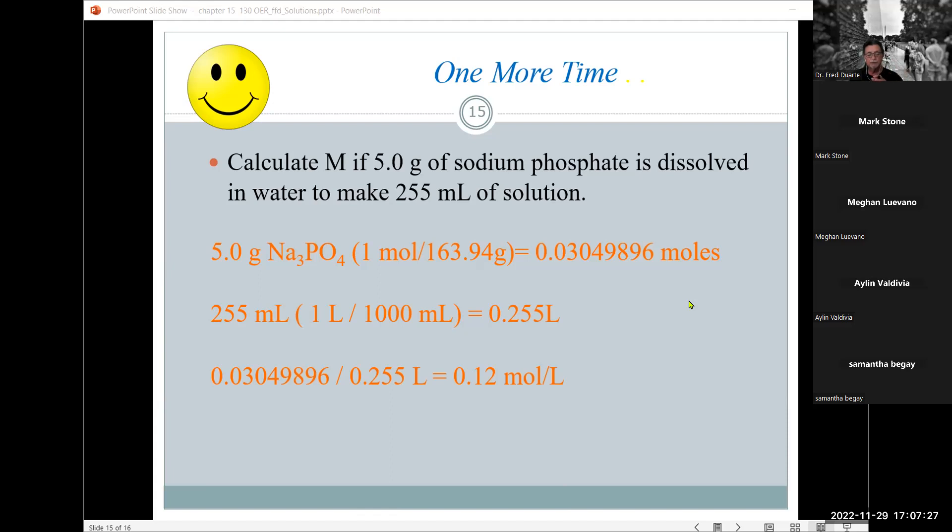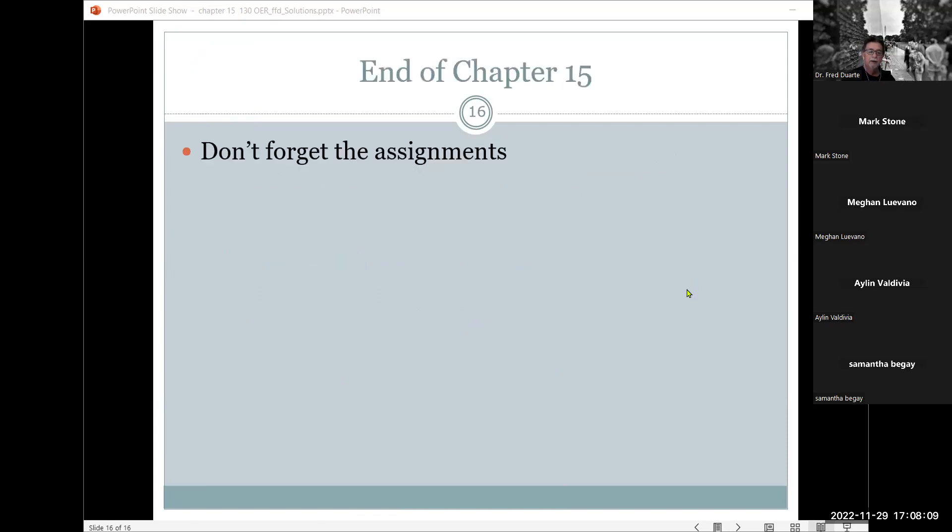All right. So that is the molarity of a solution of sodium phosphate. If I take five grams of sodium phosphate and I dissolve it in a container that gives me 255 milliliters. Normally these type of solutions are made up in these what we call volumetric flasks. A flask only has one mark and that mark is very accurate. It tells you the exact volume. And so you normally use that and you bring it up to that volume exactly on that one mark.